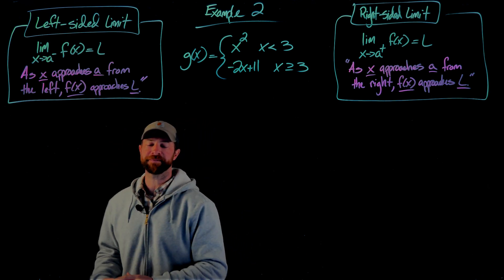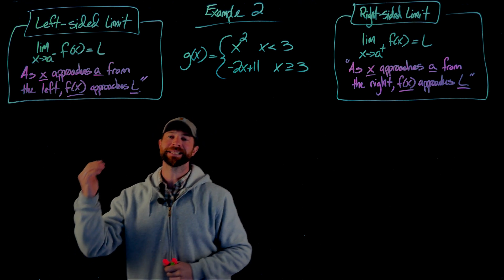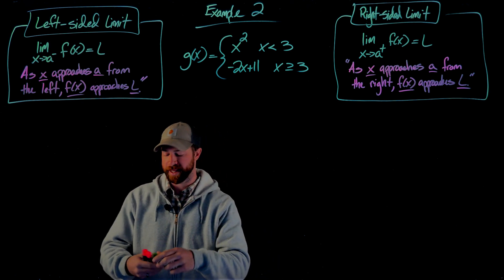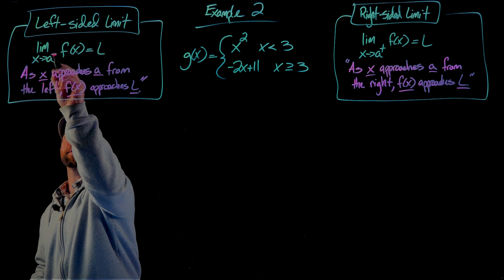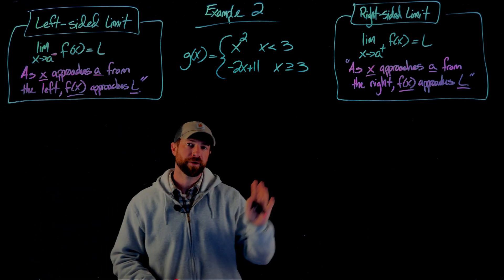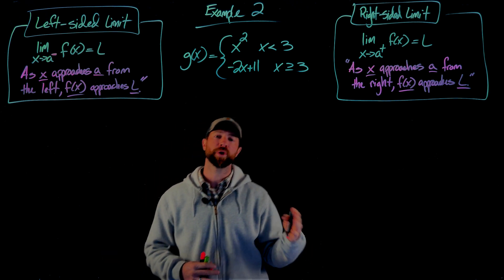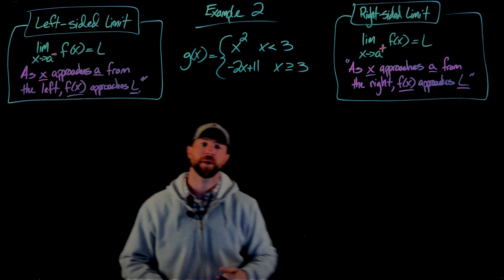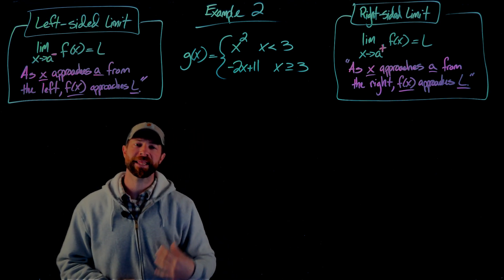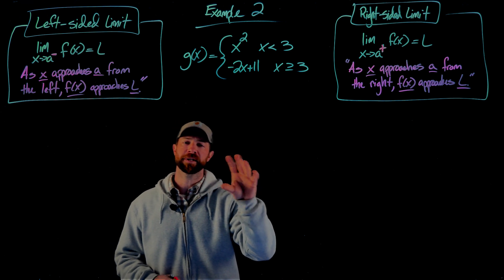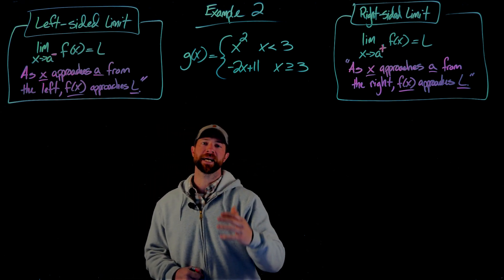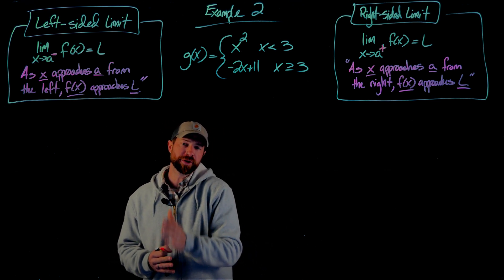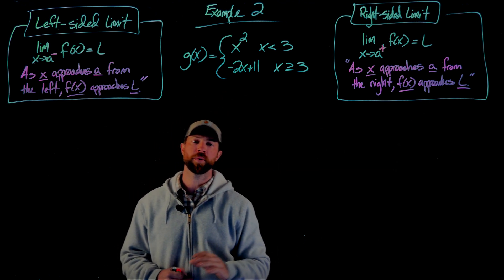The left-sided limit is the limit as you approach your a value from the left-hand side — from values less than a — denoted with a little minus sign above the a. The right-hand side limit is the opposite: approaching a from above, denoted with a plus sign. This concept is easier to see with piecewise functions.